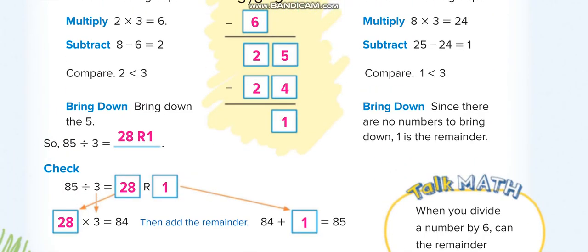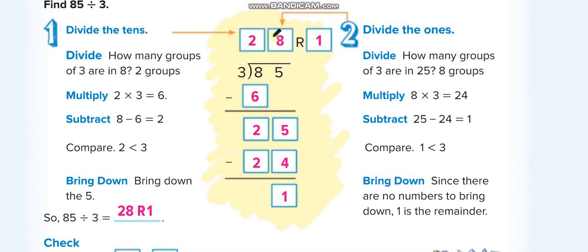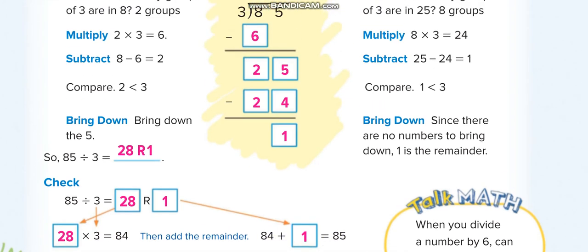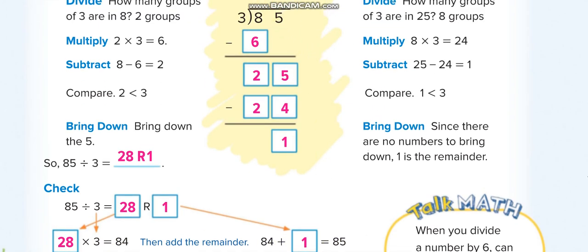How to check your answer? To check your answer, guys, you have to multiply the quotient with the divisor, 28 times 3, and then plus remainder. Again guys, to check your answer is correct, you multiply the quotient with the divisor and plus the remainder. If you get the dividend, 85, it means your answer is correct. Here, multiply the quotient with the divisor equals 84 and plus the remainder equals 85, which is equal to the dividend. It means your answer is correct.